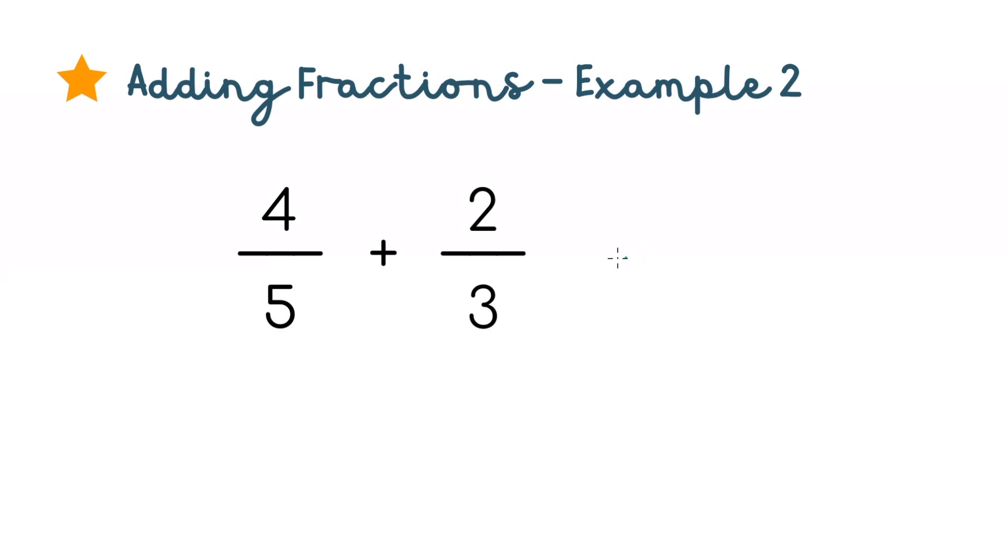Alright, let's try another example. 4 over 5 plus 2 over 3. We'll need to cross multiply 4 and 3, we'll get 12. Then cross multiply 2 times 5, which is 10.